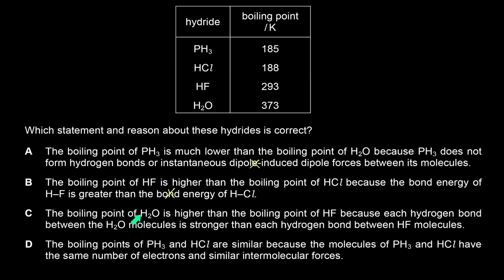Statement C says the boiling point of H₂O is higher than HF because each hydrogen bond between H₂O molecules is stronger. Is each hydrogen bond in H₂O stronger than in HF? No — HF actually has stronger hydrogen bonds, but it only has one. Water has two hydrogen bonds, which is why water has the higher boiling point. It has to do with the number of hydrogen bonds.